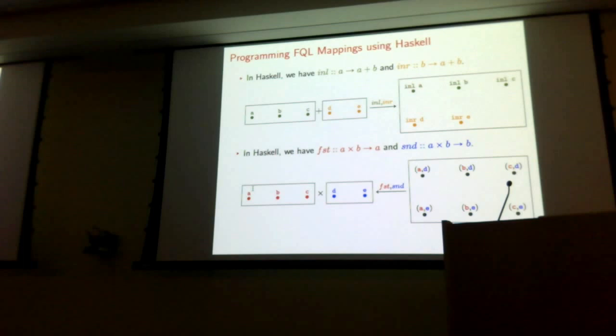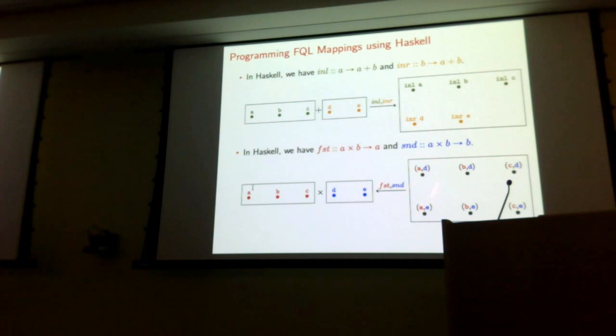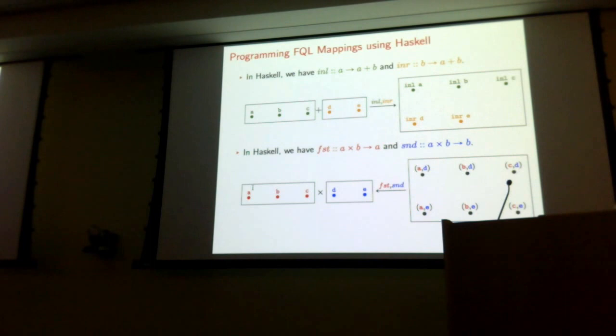For products, I need maps out of the product type. Here we have the product of a three-node and a two-node table. For the first projection, I send each node to its left component — that's in red. For the second projection, each node maps to the second part of the pair — in blue. So now I have maps from the product schema into each factor.